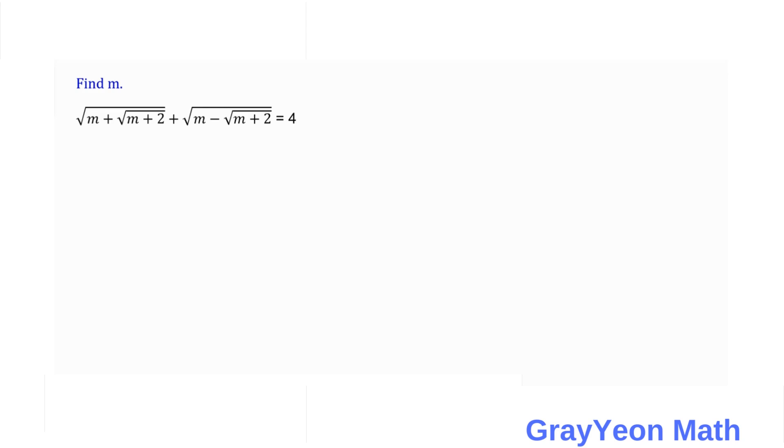The first thing we have to do is make substitutions. We let a be equal to the square root of m plus the square root of m plus two, and we let b be equal to the square root of m minus the square root of m plus two.